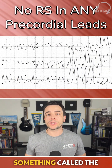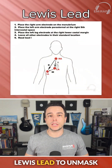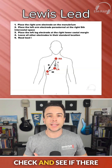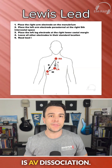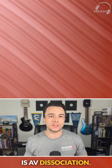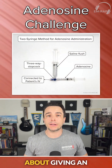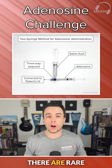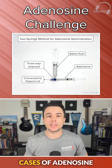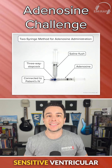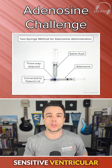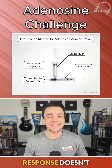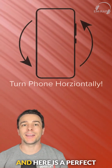You can also use something called the Lewis lead to unmask any atrial activity and check for AV dissociation. You can also think about giving an adenosine challenge, but just remember there are rare cases of adenosine-sensitive ventricular tachycardia, so a response doesn't rule out VTAC.